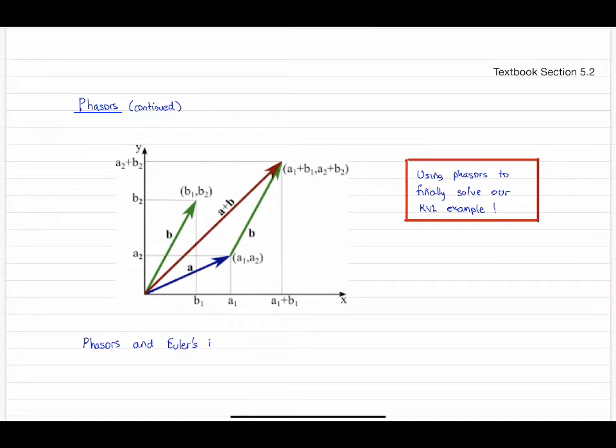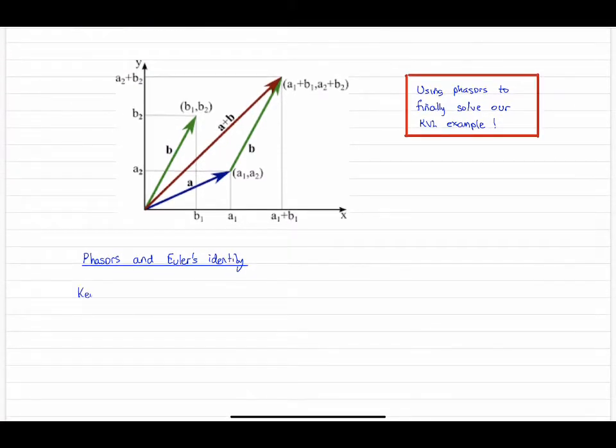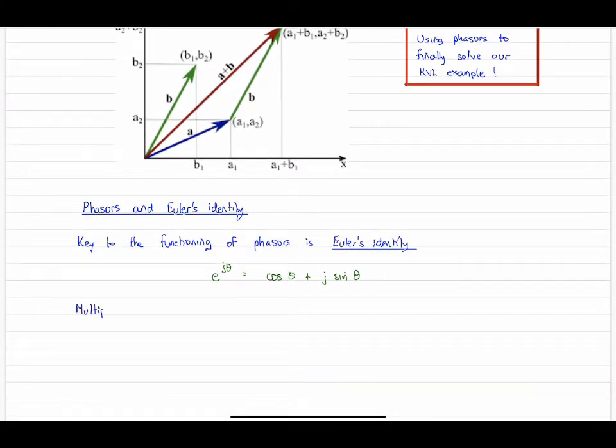The key to the success of this analysis method is Euler's identity. It is a key property that makes this work, and what it does is it relates complex exponential to a trigonometric function like a cosine. Here's Euler's identity: e to the jθ, a complex exponential, is cos θ plus j sin θ.